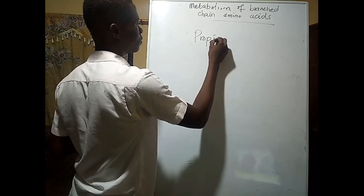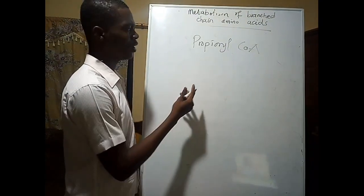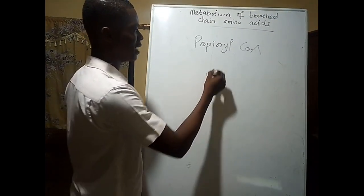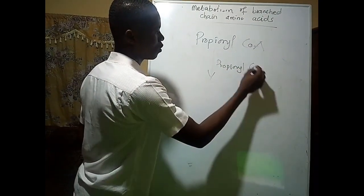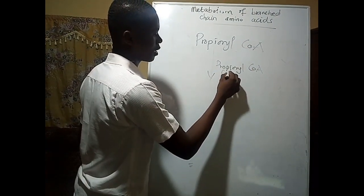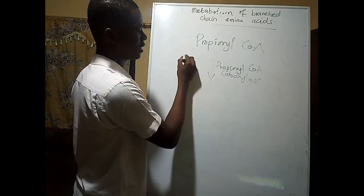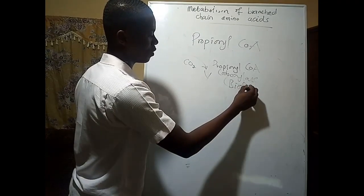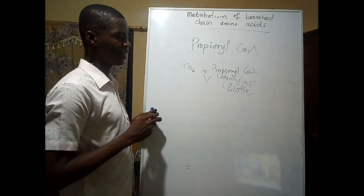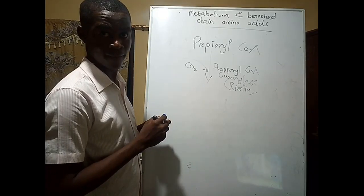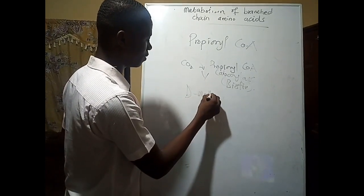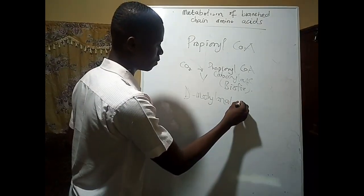Propionyl-CoA obtained from the metabolism of isoleucine and valine can be acted on by an enzyme called propionyl-CoA carboxylase. If you hear 'carboxylase,' that means carbon dioxide is being added. This enzyme requires a coenzyme called biotin. When this enzyme acts on propionyl-CoA, we get a compound called D-methylmalonyl-CoA.